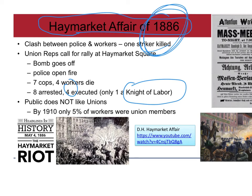Despite only one of the executed being connected to the Knights of Labor, the way events were portrayed made union workers look like anti-government anarchists. This destroyed the public image of unions — by 1910, only five percent of workers in America were actually part of a union. Historians have since gone back and concluded that cops likely did most of the killing, including some friendly fire deaths among their own ranks. The Haymarket Affair killed the momentum for unions in general.